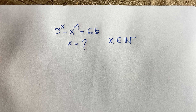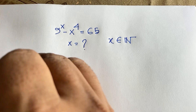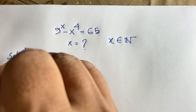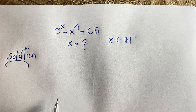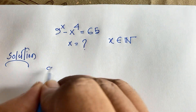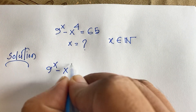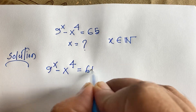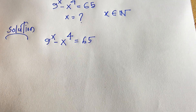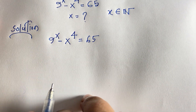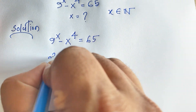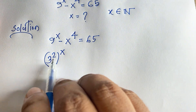But how do we formally find the value of x in this Math Olympiad question? Let's start our solution. Our equation is 9 to the power x minus x to the power 4 equals 65. We can write 9 to the power x as 3 to the power 2, whole to the power x.